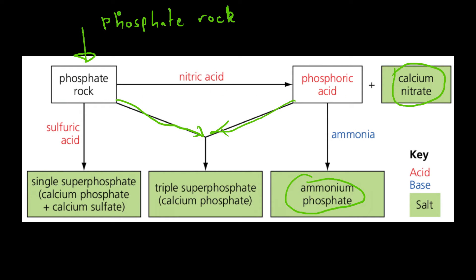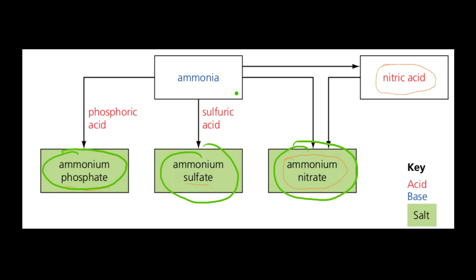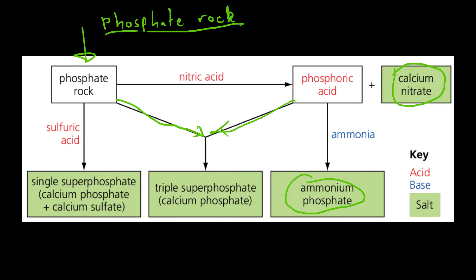So, phosphate rock, if you want an easy way to remember, phosphate rock plus the three strong acids, so sulfuric acid, nitric acid, phosphoric acid is going to give you your salts. Also ammonia plus the three strong acids, sulfuric acid, phosphoric acid, nitric acid gives you your salts. And they're nice and easy to work out. So I hope that makes sense.